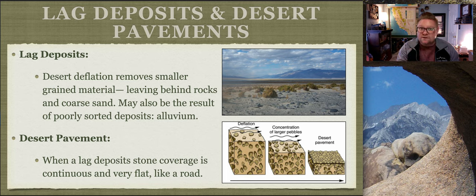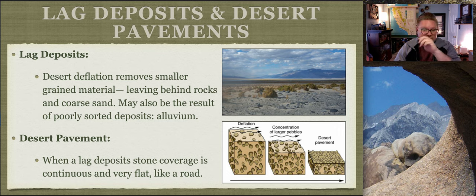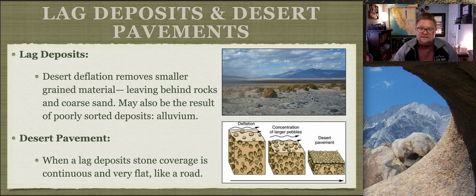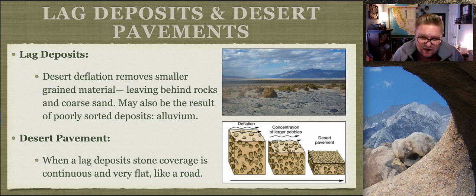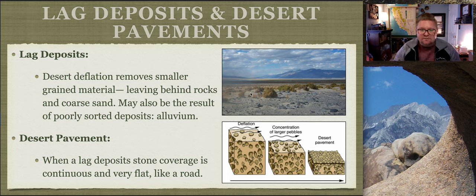Lag deposits are what result when desert deflation - removing all loose material like deflating a tire - removes smaller grain material, leaving behind the coarser grains and bigger rocks. In this diagram, creosote bushes are visible with small sand dunes forming nearby, and these bigger rocks have been exposed in the gray area. Sand gets trapped around those bigger pieces but blows and piles into dunes. This is a classic lag deposit.